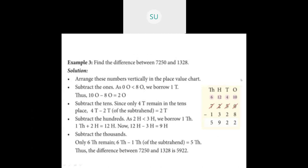Then we saw subtraction of 4-digit numbers with regrouping. To find the difference between 7250 and 1328, we arrange the numbers vertically and subtract from the ones place. 0 minus 8 — we borrow 1 ten, so ones become 10 minus 8 = 2, tens become 4 minus 2 = 2. In hundreds: 2 hundreds minus 3 hundreds — borrow from thousands, so 12 minus 3 = 9 and 6 minus 1 = 5. The difference is 5922.